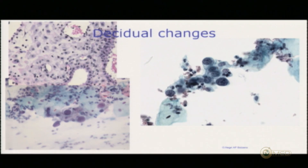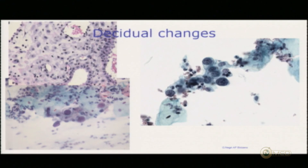Now I change the premise a little. This woman is coming as a consequence of HPV positivity in primary HPV screening — this is a triage case. Are you still calling it negative? Why not? Do you think that HPV changes the morphology? Are you convinced that these are decidual changes? Yes. So why are you going to call it with another diagnosis? It was negative before, it stays negative. It's negative even if it's HPV positive.